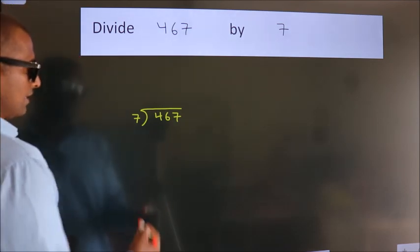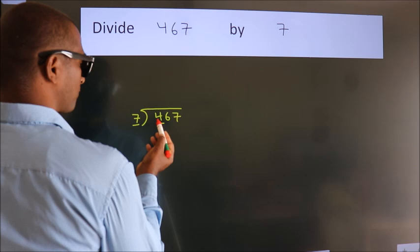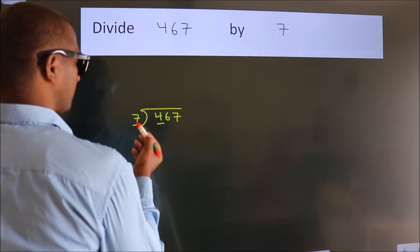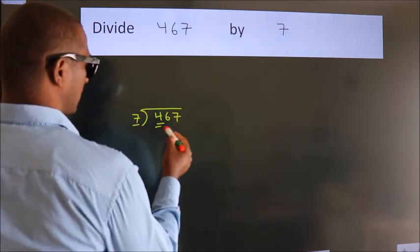Next, here we have 4, here 7. 4 is smaller than 7, so we should take two numbers: 46.